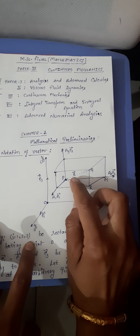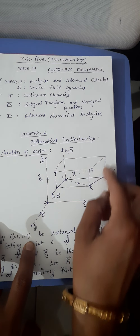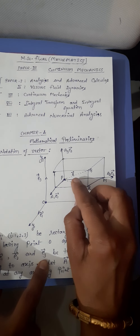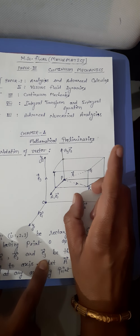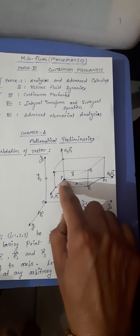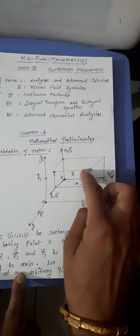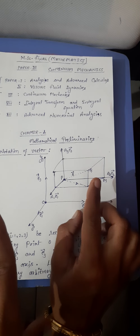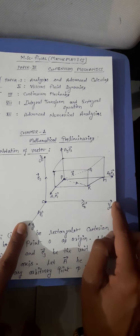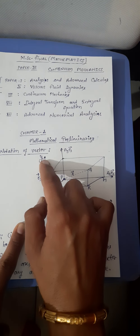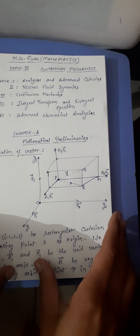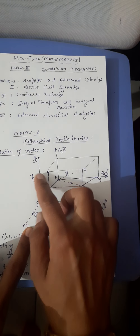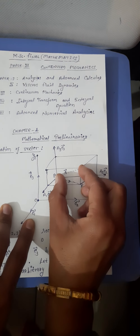We take a rectangular parallelepiped with PQ as the diagonal of this parallelepiped. The point PQ is shown by vector A. PQ is the diagonal representing vector A, which is any vector situated at point P. e1, e2, e3 are the unit vectors corresponding to the y1, y2, and y3 axes respectively.